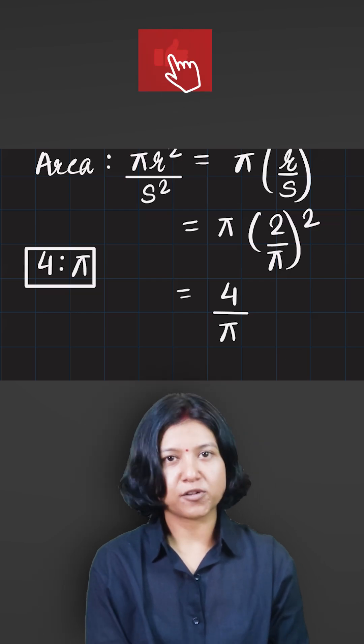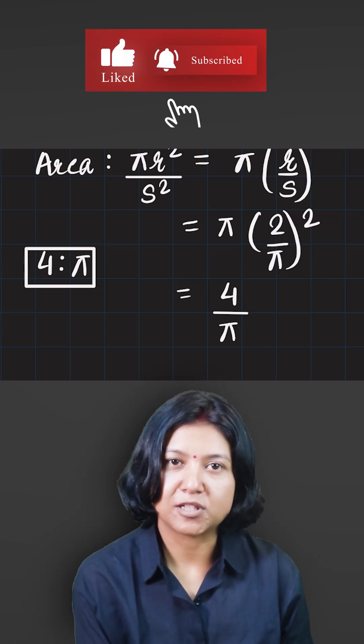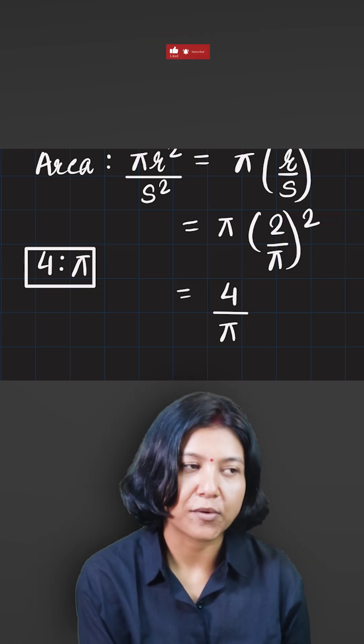So this is how you find the area ratio provided you know the relation between the radius and the side of a square.